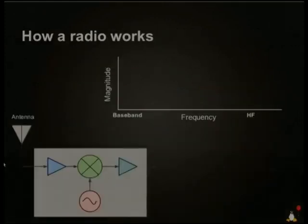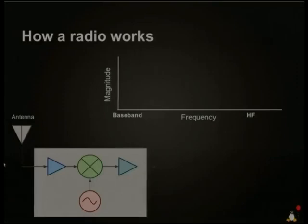Here we have a radio block diagram — pretty simple, only five little blocks. We're going to look at the different signals that go through the different parts of this radio. Up in the top right there's a little graph: on the x-axis we have frequency, and on the y-axis the magnitude of the transmission. Electrical engineers like representing signals as pointy arrows.